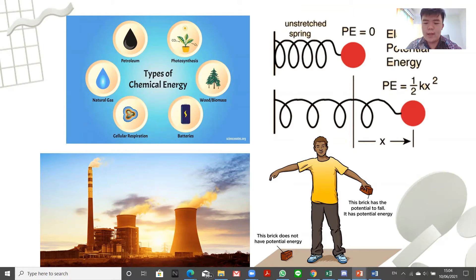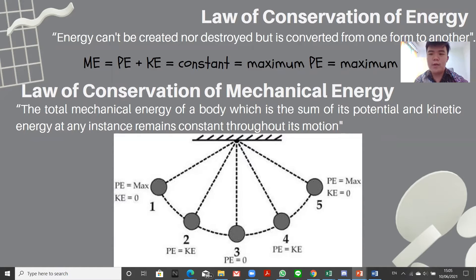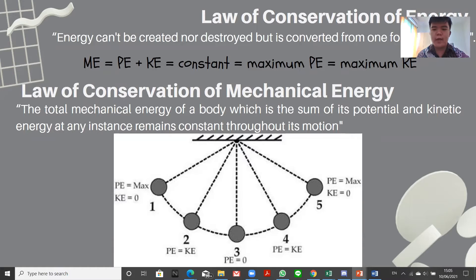Gravitational energy can only be produced when there is some distance between the object and the reference point. As shown in the picture, the brick has no potential energy when it is on the ground — this is only true if we are finding the potential energy with respect to the ground and not to the center of the earth. Energy cannot be created nor destroyed but is converted from one form to another. The law of conservation of mechanical energy states that the total mechanical energy of a body — the sum of its potential and kinetic energy at any instance — remains constant throughout its motion.